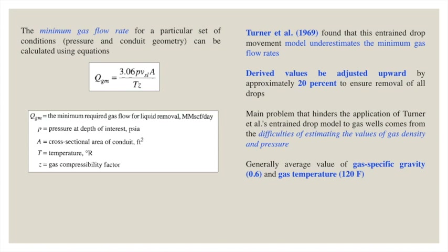Turner et al. 1969 found that the entrainment drop movement model underestimates the minimum gas flow rate. The derived value was adjusted approximately 20 percent upward to ensure removal of the droplets. The main problem hindering the application of the Turner entrainment drop model to gas wells comes from the difficulty of estimating gas density and bottom hole pressure in multi-phase flow. However, by adjusting certain factors these difficulties can be managed.